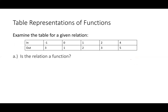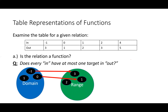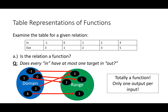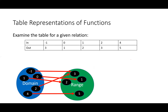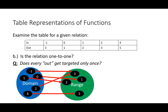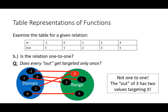Let's examine this table. Is this relation a function? The question we should ask is: does every input have at most one target output? Making a function diagram, we can see it's totally a function — there's only one output per input. Now let's see if it's one-to-one. Three is problematic — we see that 3 has two values targeting it: negative one and two both go to 3. So this is not one-to-one. It's a function, but it's not one-to-one.